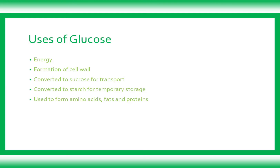Proteins fulfill the role of growth, repair, and nitrogen supply. Nitrate ions plus glucose will form amino acids. That's why amino acids and fats are also produced.